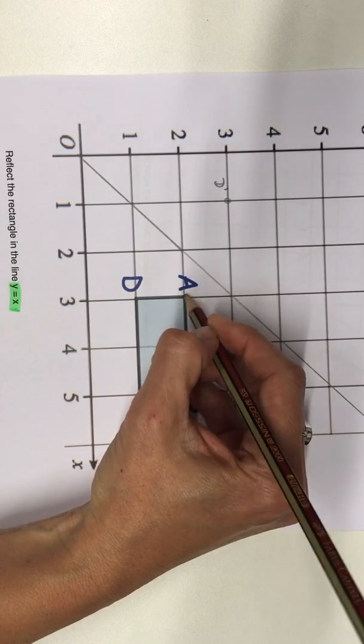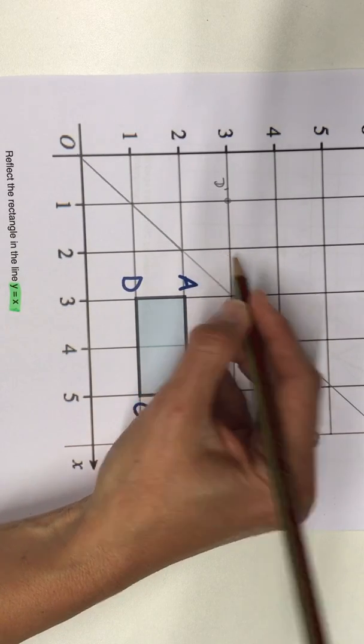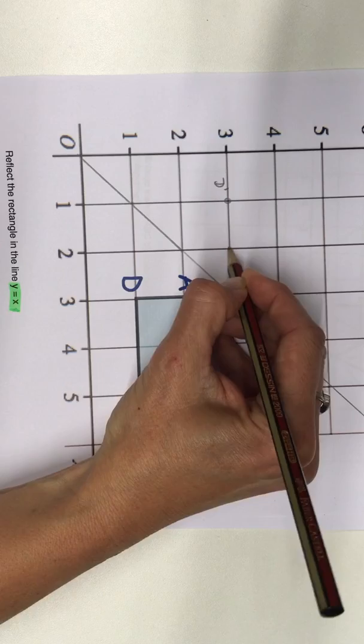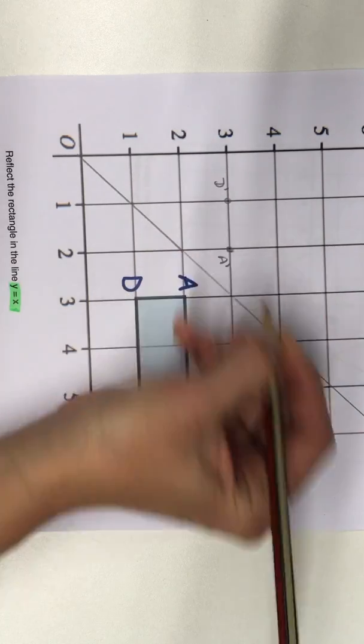The A is half a diagonal away. So on the other side of the mirror line, it's half a diagonal away. So I'm going to put that in and I'm going to call that A' dash.